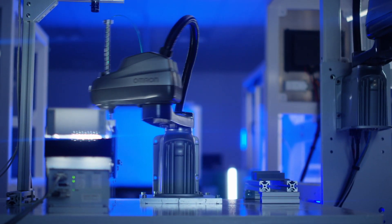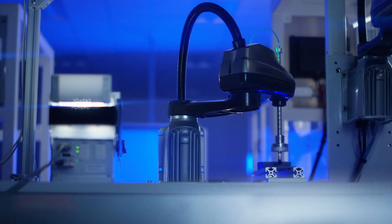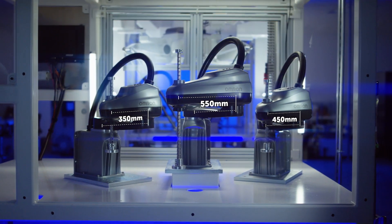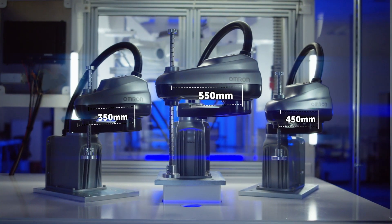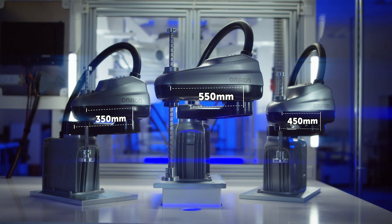The i4L is ideal for high-speed, repeatable applications. It has three options of working envelope, with reaches of 350, 450, and 550 mm.